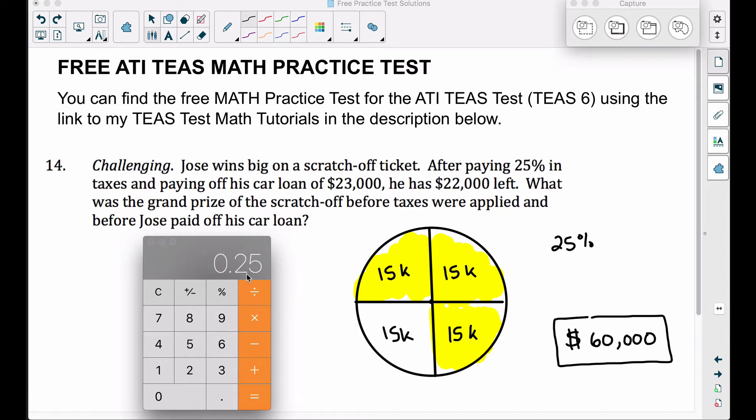A quick way to find a percentage of a number is to take that percent. 25% is 0.25 of what Jose won. So he won $60,000, I'm taking 25% of $60,000. I'm multiplying those two numbers and that's $15,000. Well, he had to pay this in taxes.